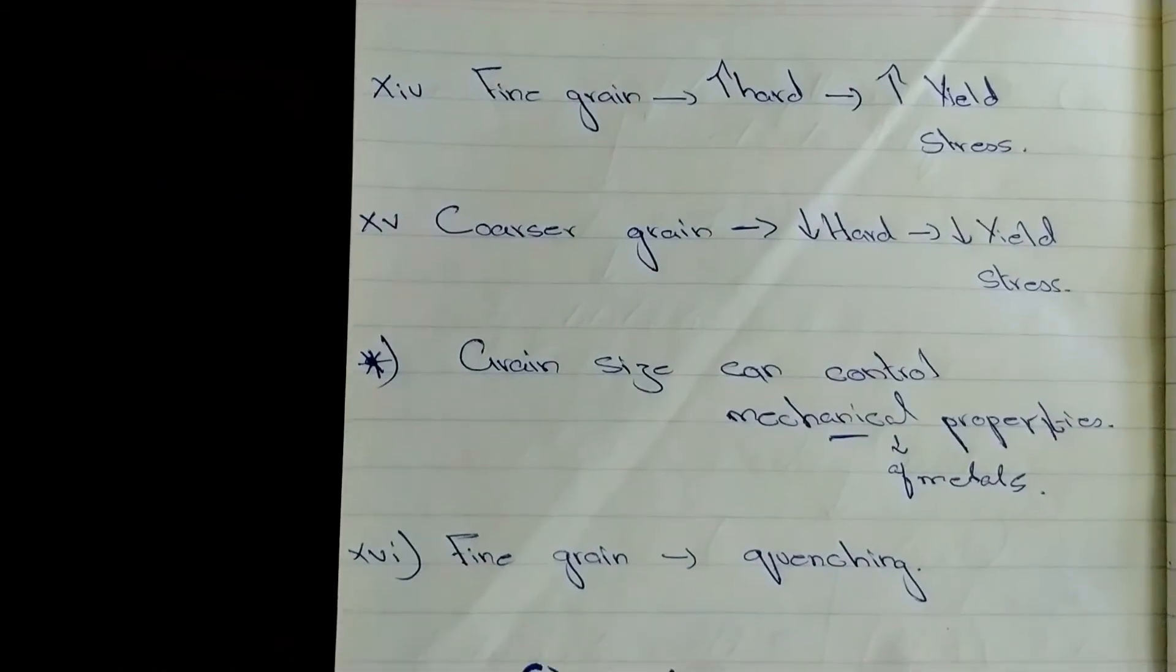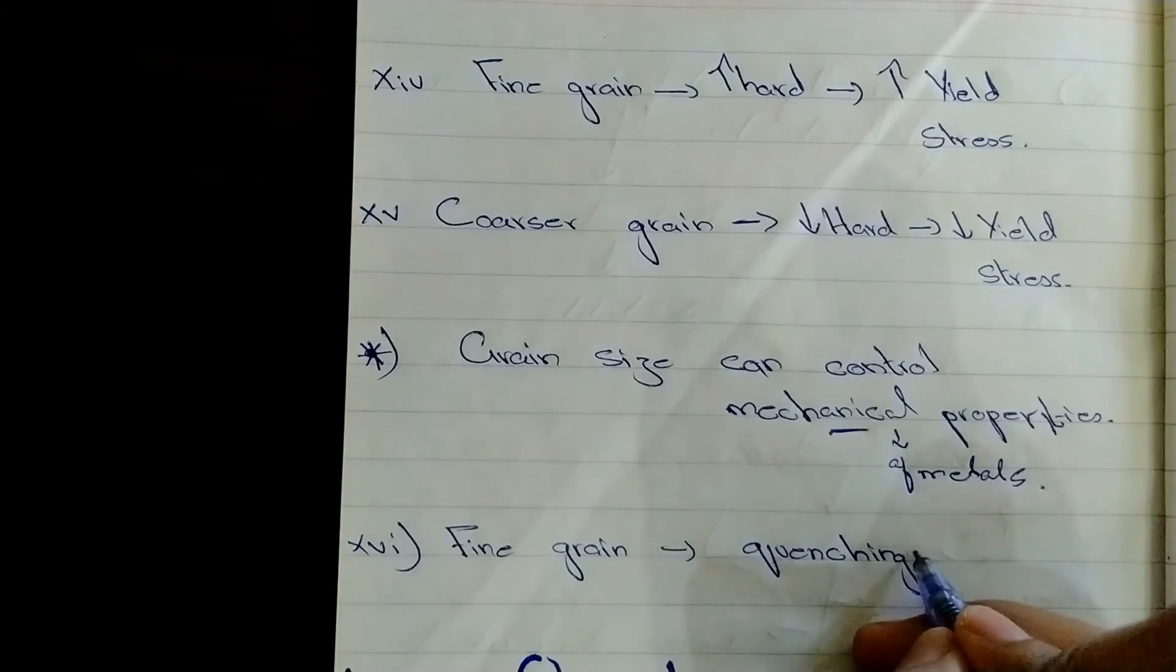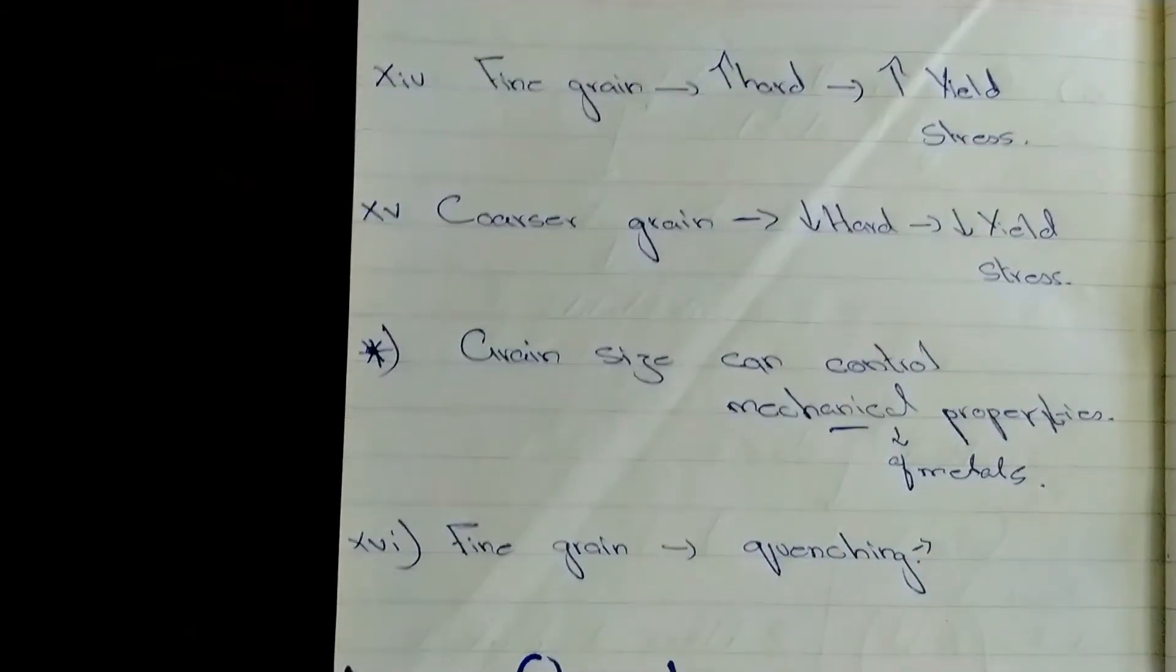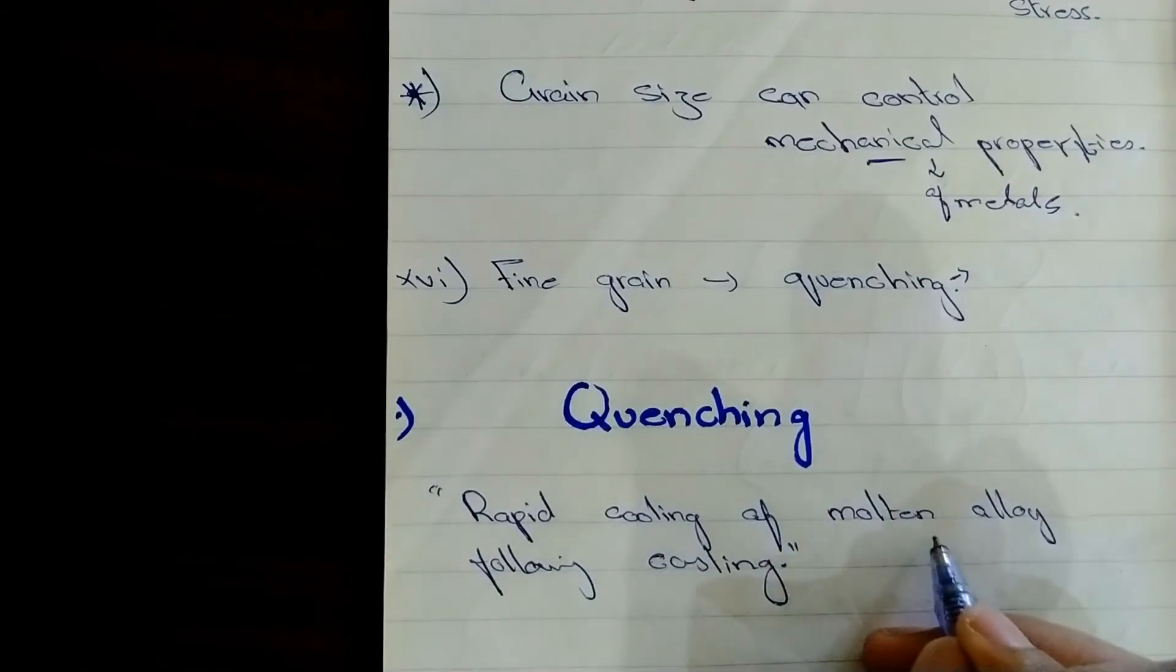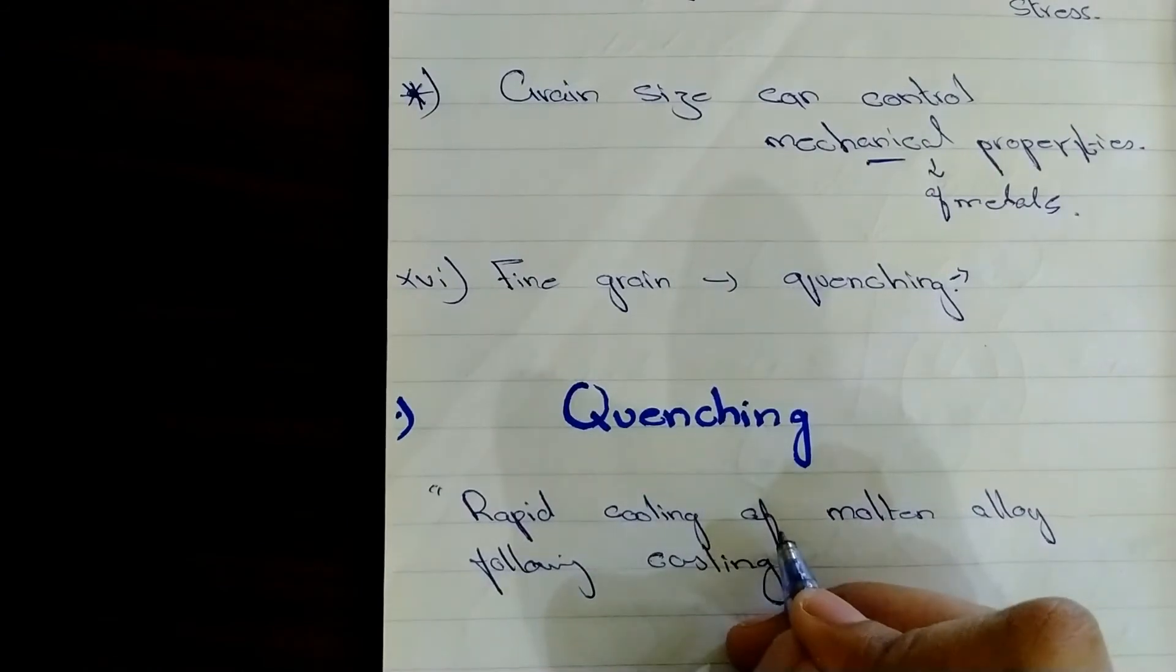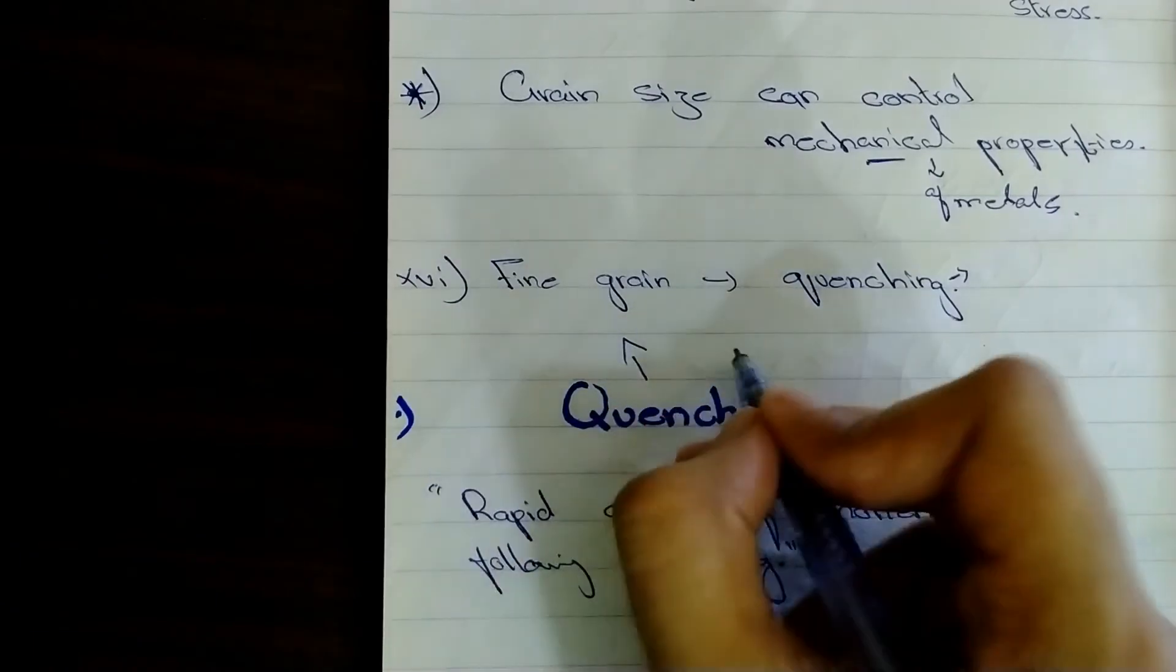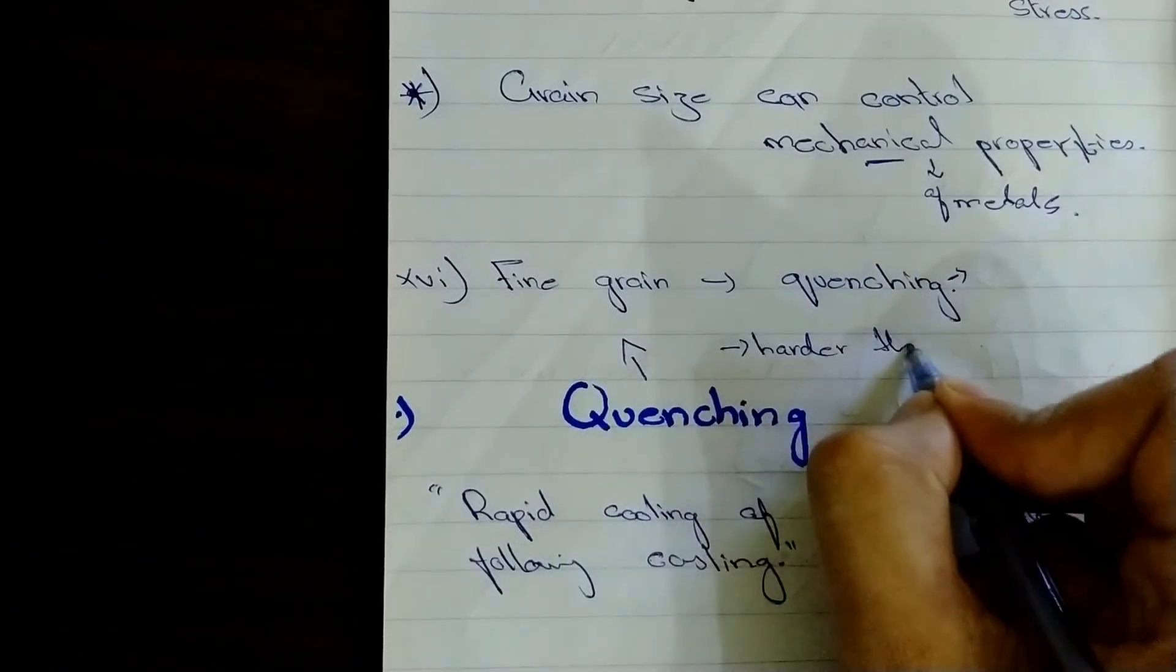So, what we conclude from this is that grain size can control mechanical properties of metals. And to get a fine grain structure, we have to quench a metal. So, now what is quenching? Quenching is the process of rapid cooling of molten alloy following casting. Why we do quenching is to get a fine grain structure. The finer the grain structure, the harder the metal.